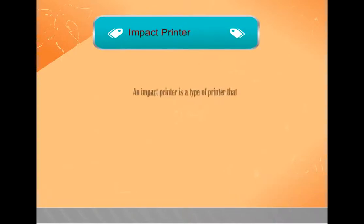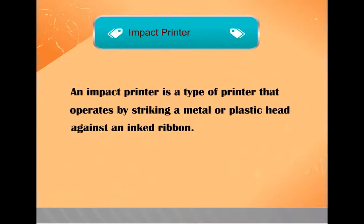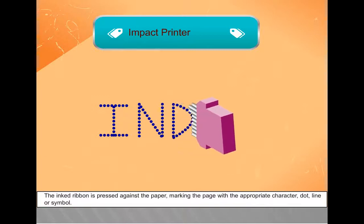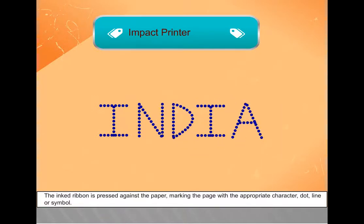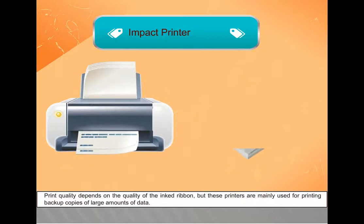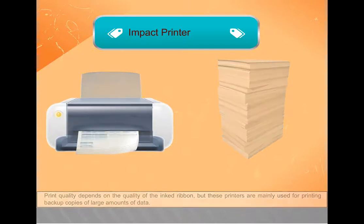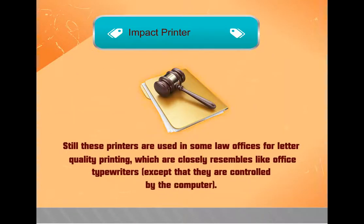An impact printer is a type of printer that operates by striking a metal or plastic head against an inked ribbon. The inked ribbon is pressed against the paper, marking the page with the appropriate character, dot, line, or symbol. Print quality depends on the quality of the inked ribbon, but these printers are mainly used for printing backup copies of large amounts of data. Still, these printers are used in some law offices for letter quality printing, which closely resembles office typewriters except that they are controlled by the computer.